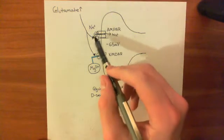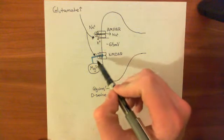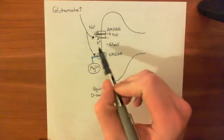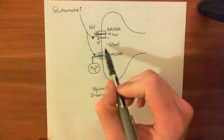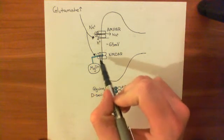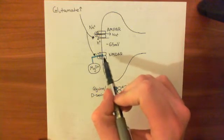It's going to bind to AMPA receptors and NMDA receptors. It's going to cause both to open, but at normal resting membrane potential across the cell membrane, the NMDA receptor is going to be blocked by a magnesium ion trying to come through it.